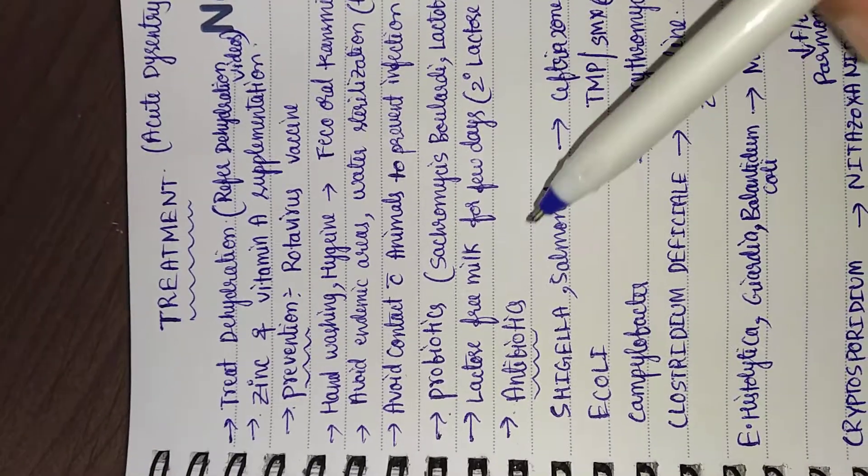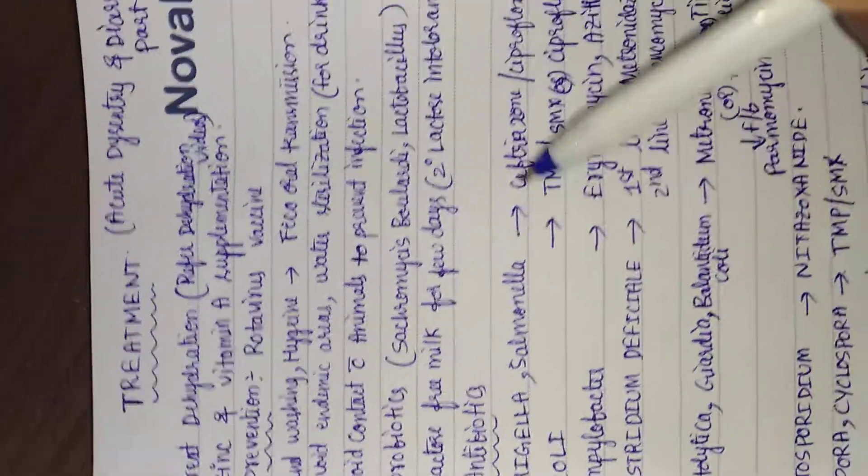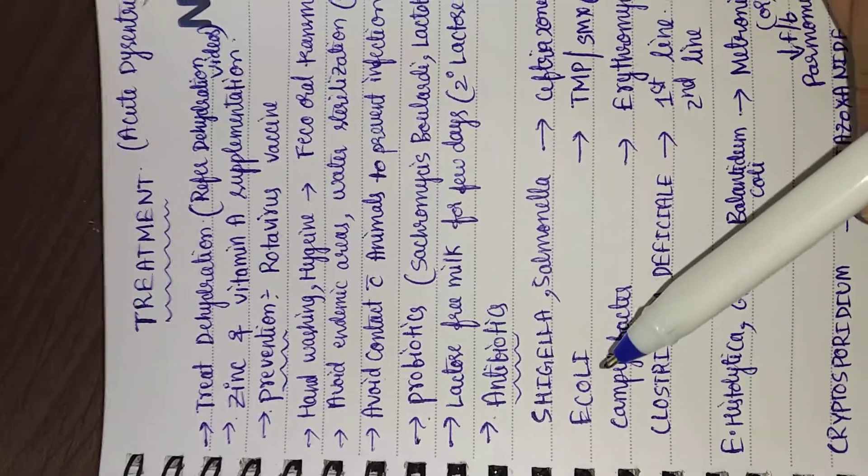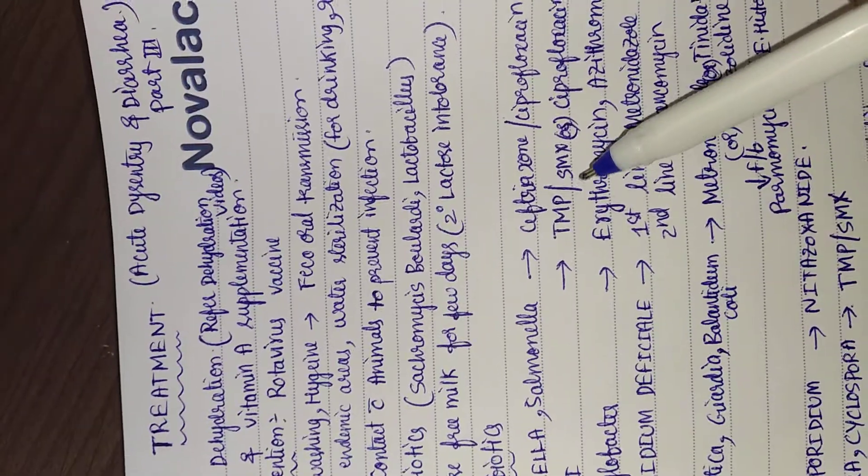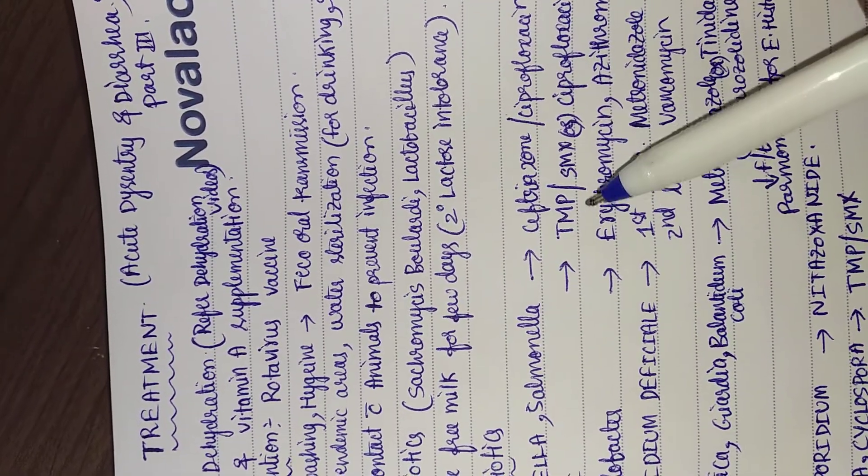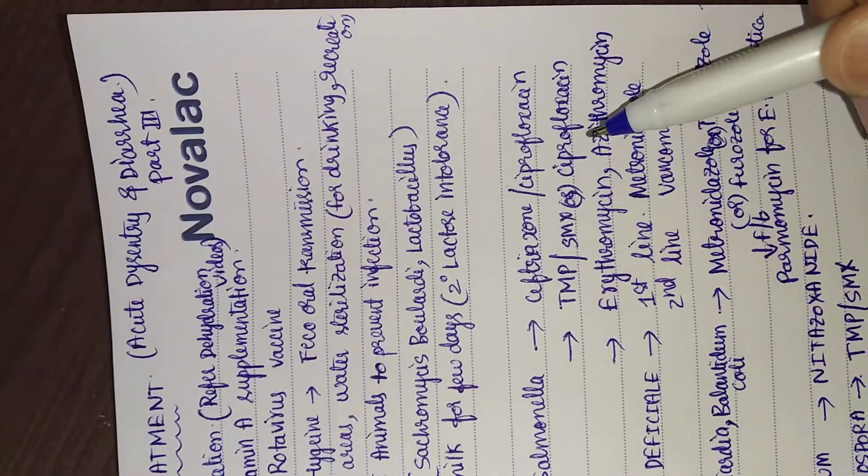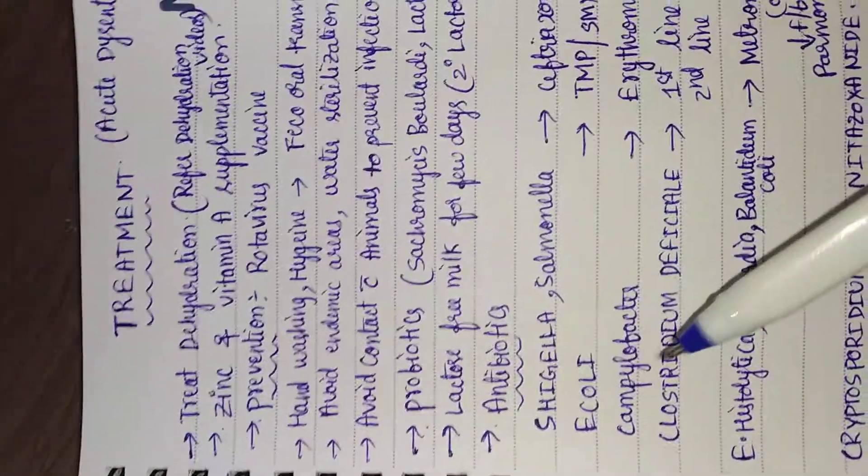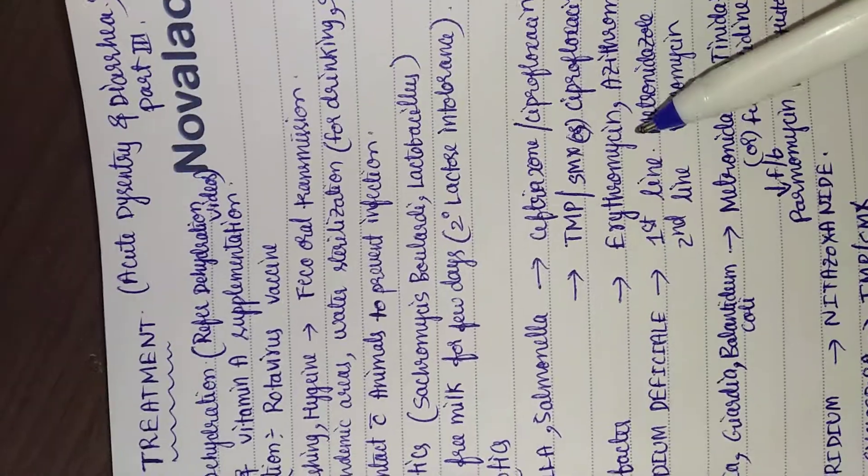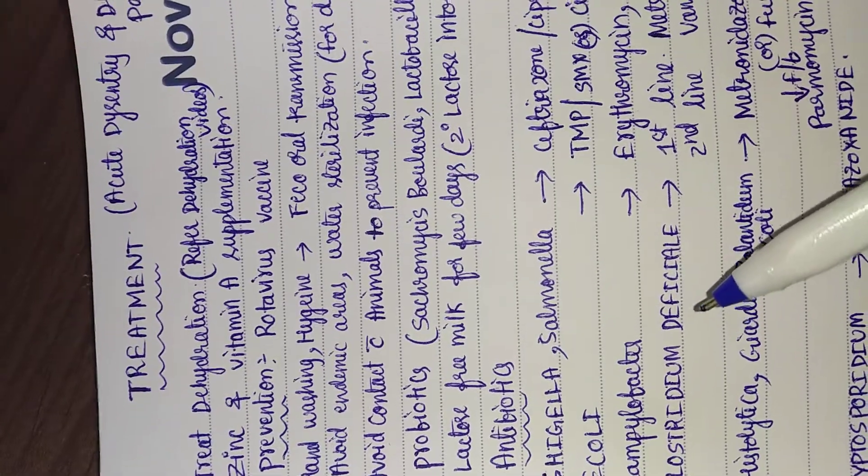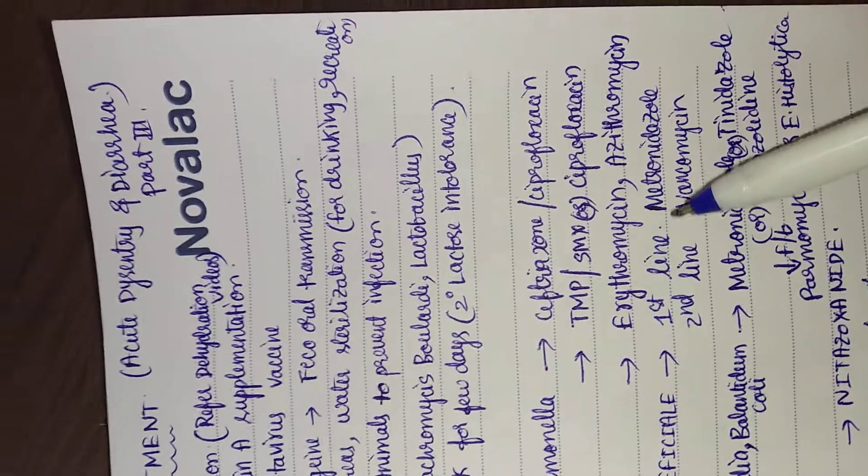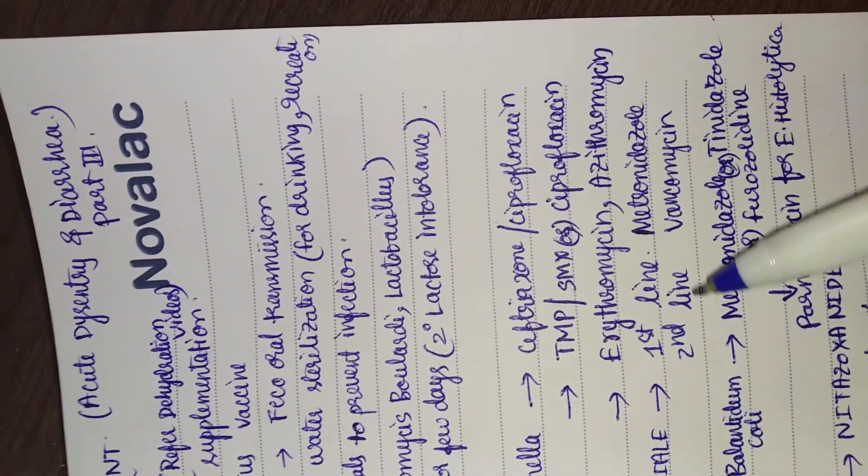Antibiotics: In Shigella and Salmonella, ceftriaxone or ciprofloxacin are effective. In E. coli, trimethoprim-sulfamethoxazole (that is cotrimoxazole) or ciprofloxacin is effective. For Campylobacter, erythromycin or azithromycin is effective. For Clostridium difficile, first line is metronidazole, second line is vancomycin.